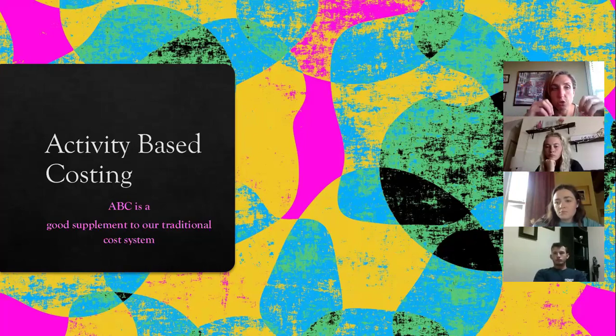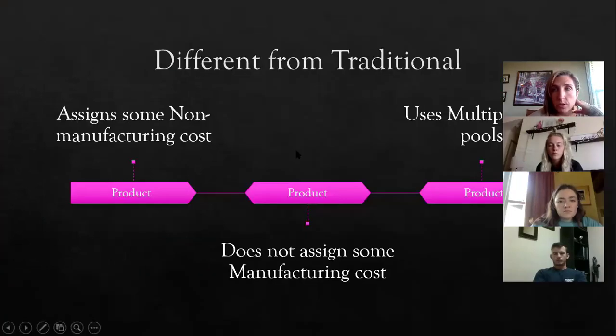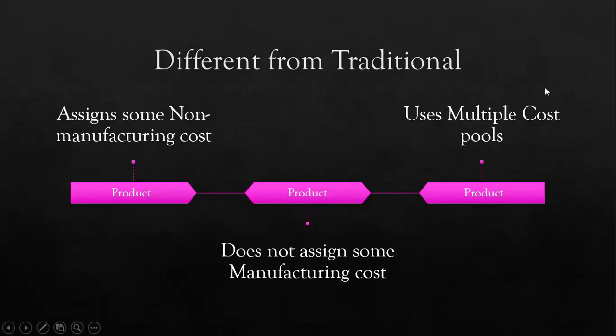Activity-based costing is very similar to the traditional method, but it uses multiple cost pools. The slide says it breaks overhead down into smaller chunks. If I have a million dollars of overhead I could break it down — say, two hundred thousand, three hundred thousand, and five hundred thousand — that still totals a million. I'm just breaking it into smaller pieces.